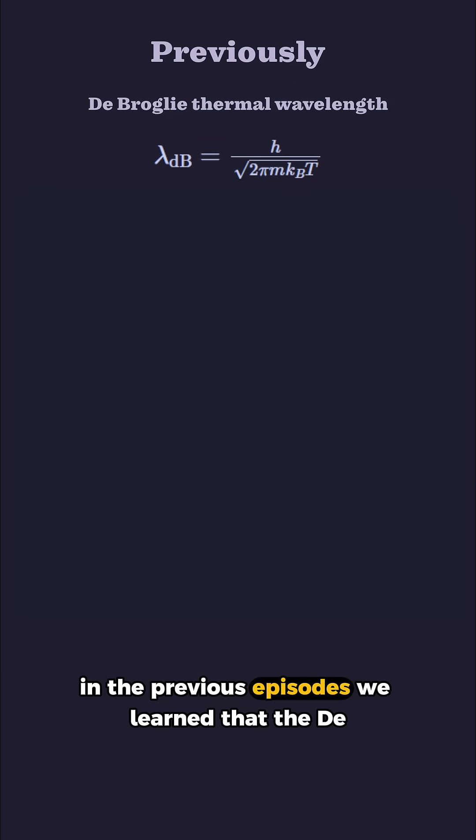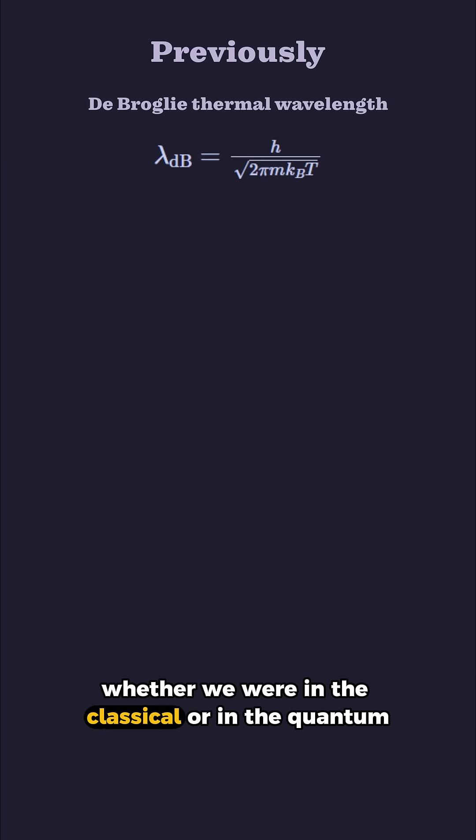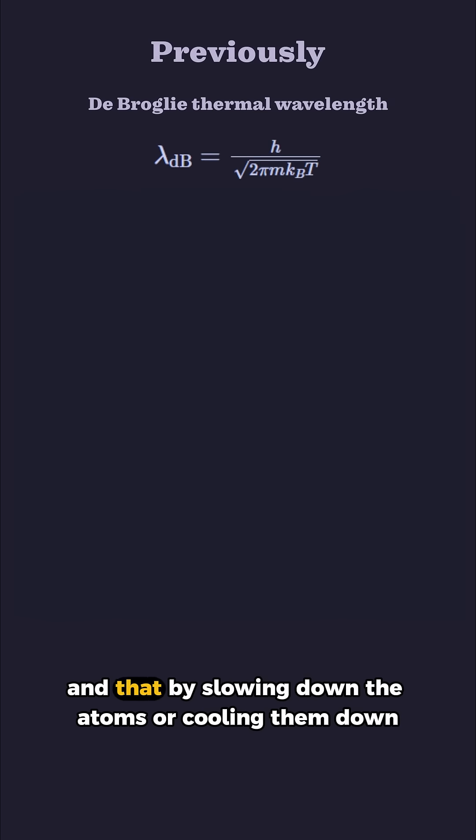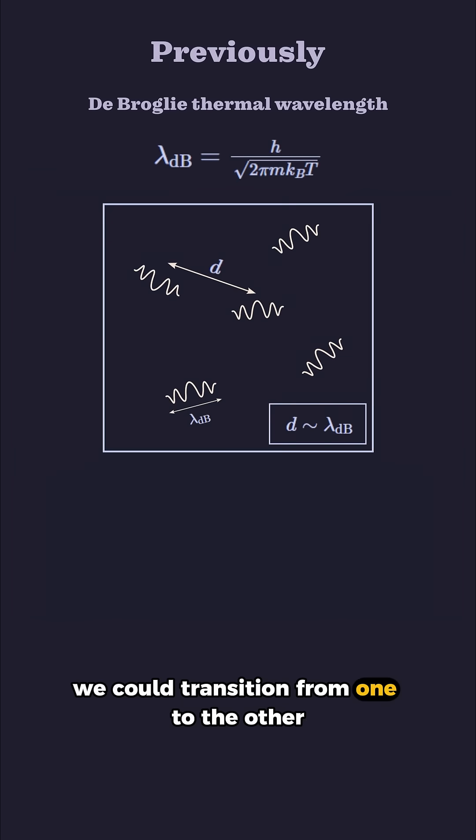In the previous episodes we learned that the de Broglie wavelength was the key parameter that helped us know whether we were in the classical or in the quantum regime, and that by slowing down the atoms or cooling them down we could transition from one to the other.